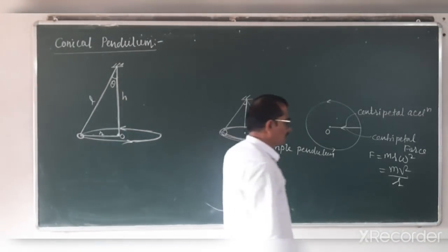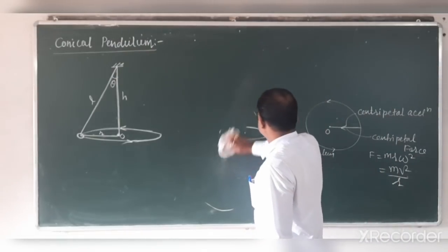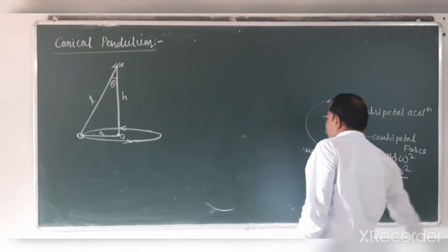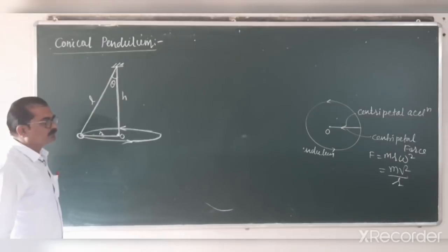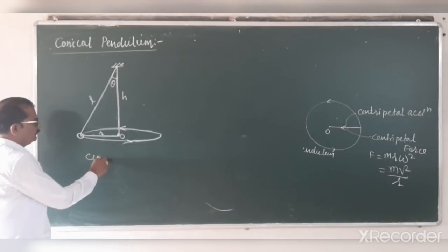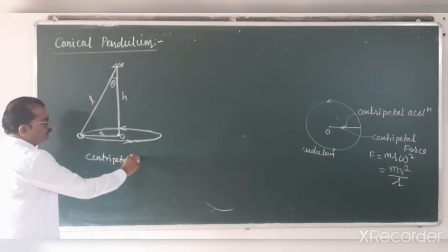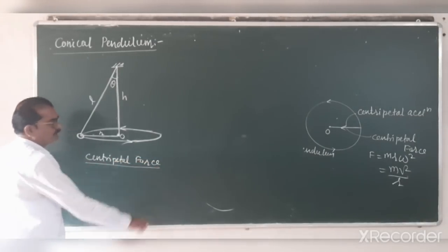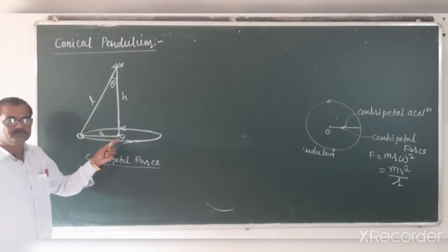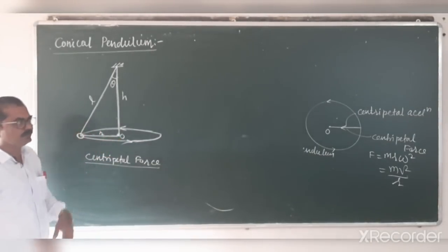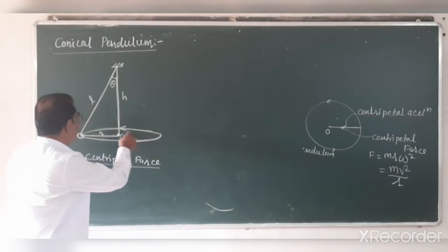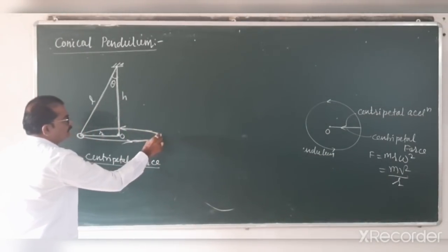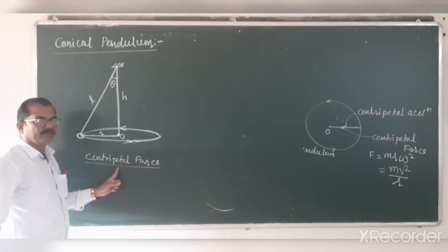We have to find out the expression for the time period of the conical pendulum. When the conical pendulum is performing circular motion, there is a necessity of centripetal force. Because when the body is performing circular motion, the necessary force is called centripetal force. As this bob is revolving in a horizontal circular path, it performs circular motion and needs centripetal force.